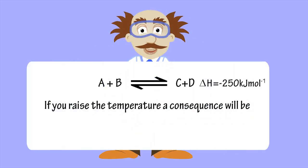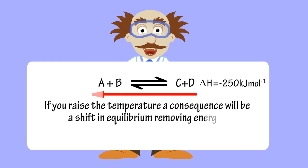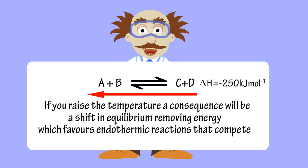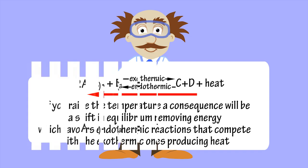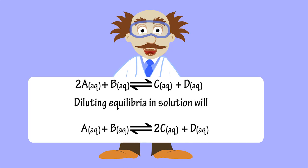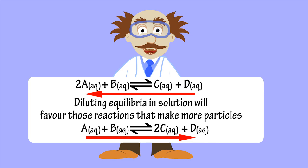If you raise the temperature, a consequence will be a shift in equilibrium removing energy, which favours endothermic reactions that compete with the converse exothermic ones producing heat. Diluting equilibria in solution will favour those reactions that make more particles.